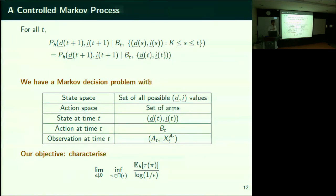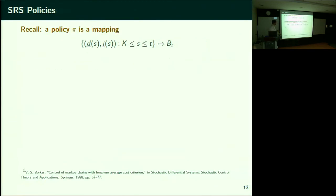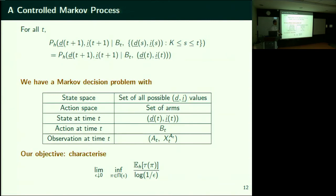Just to get back on track: we are in the odd movie identification problem, one movie is different, we want to identify it as quickly as possible, we are given a probability of error, and we want to understand how much time we take as a function of the probability of error — capturing the growth rate in the asymptotics as probability of error goes to zero.